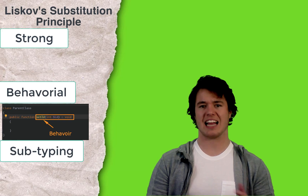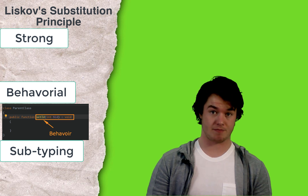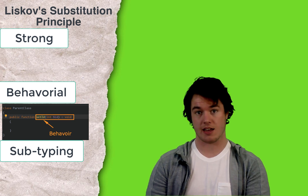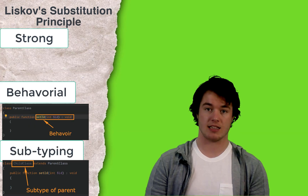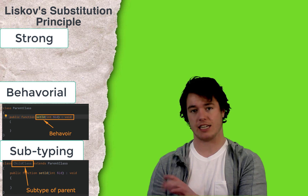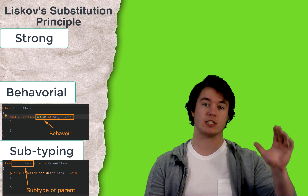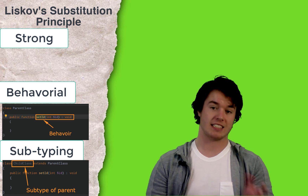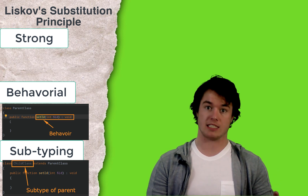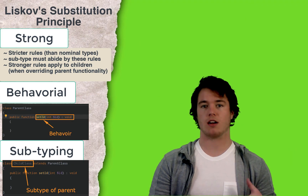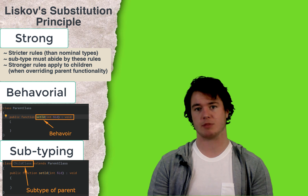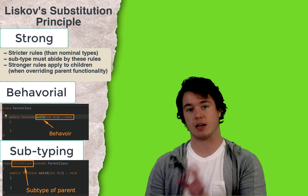A class can have behavior. This behavior is defined by a class's functions or methods. A subtype is a child class that inherits its functionality from the parent class — when a child class inherits its functionality from a parent class, it is what is known as a subtype, or Strong Behavioral Subtype. 'Strong' references stricter, more regulated or highly enforced rules.